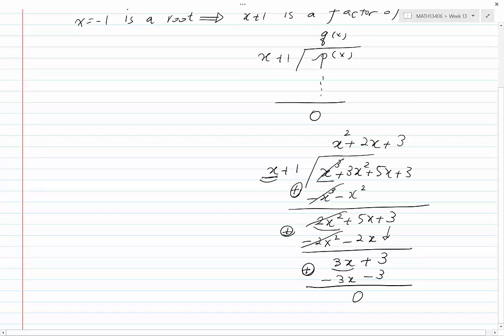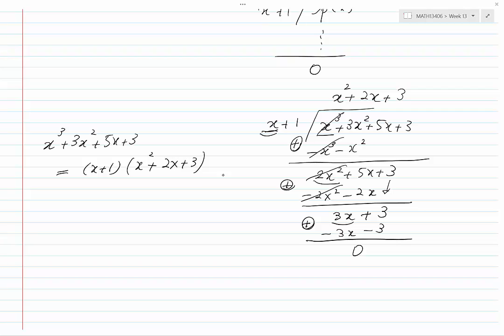Therefore, we can write x cubed plus 3x squared plus 5x plus 3, which is our dividend, is equal to x plus 1, which is the divisor, times x squared plus 2x plus 3, which is the quotient, plus 0, which is the remainder.